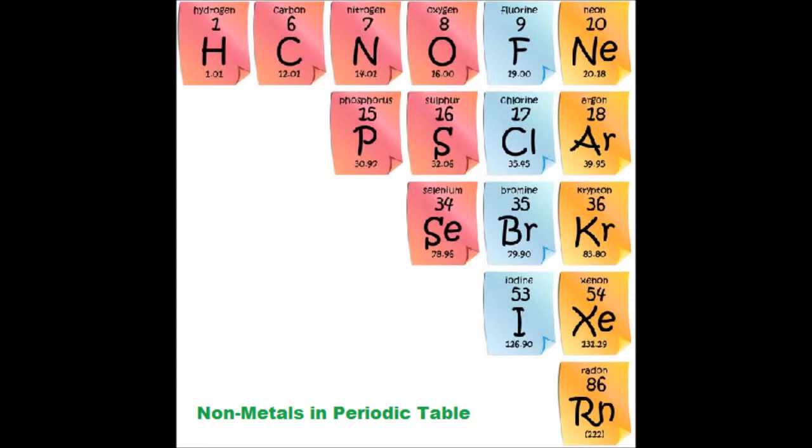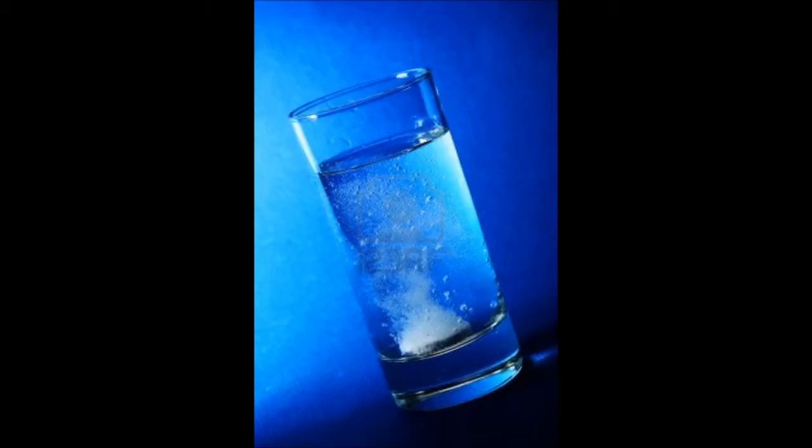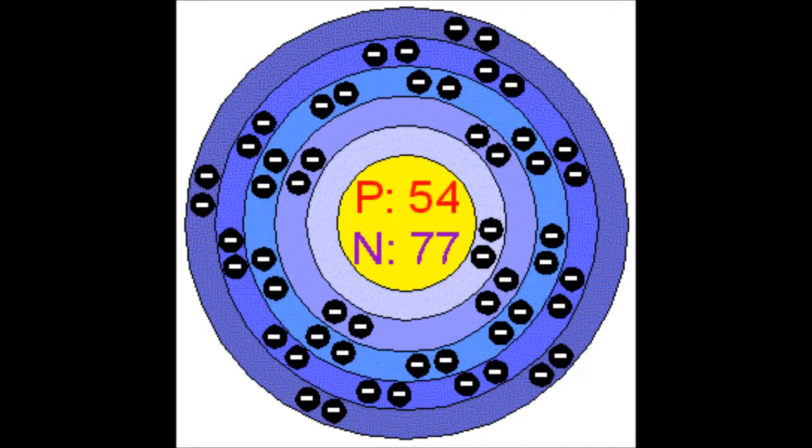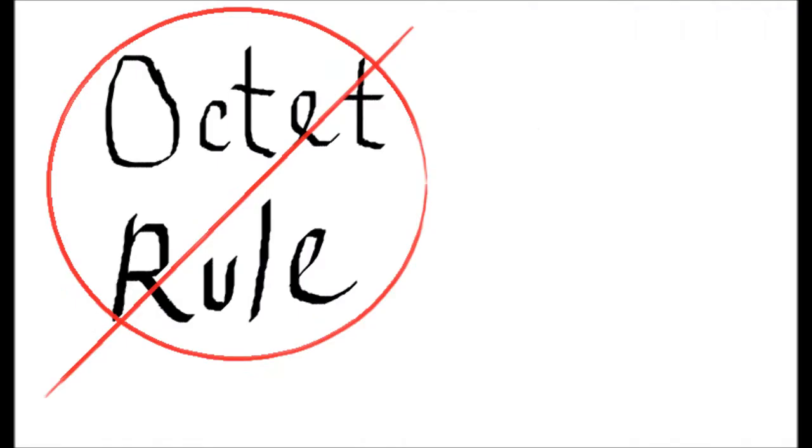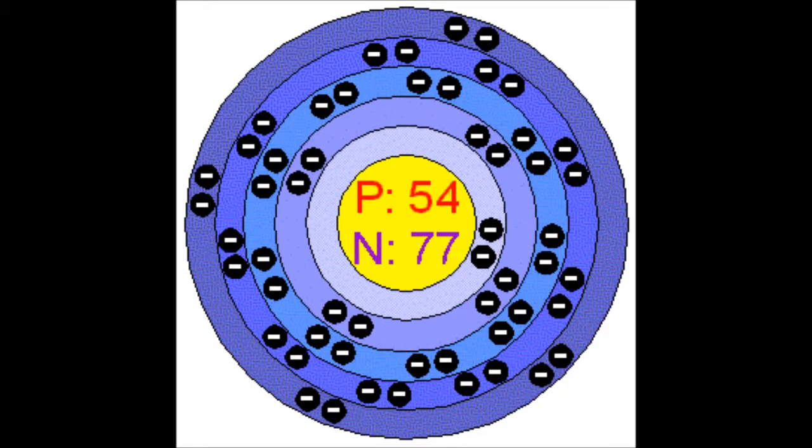Due to being a non-metal, xenon is only slightly soluble in water. As seen here in this Bohr-Rutherford diagram, the atomic structure of xenon does not follow the octet rule. This is one of the many exceptions to that rule.